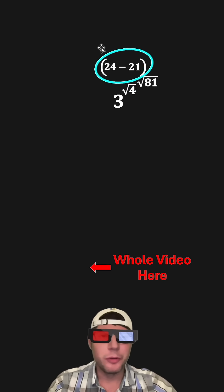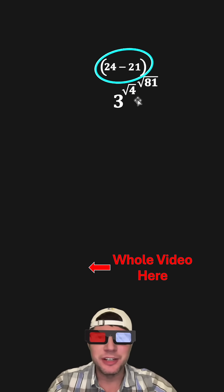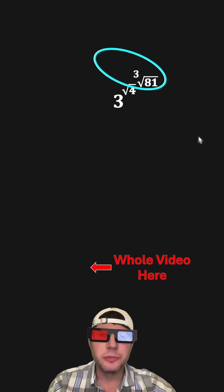And now we can do the whole parentheses. 24 minus 21 is 3. So we have the cube root of 81.